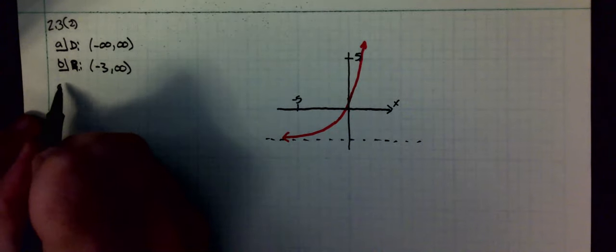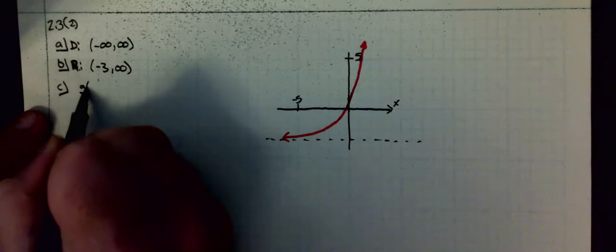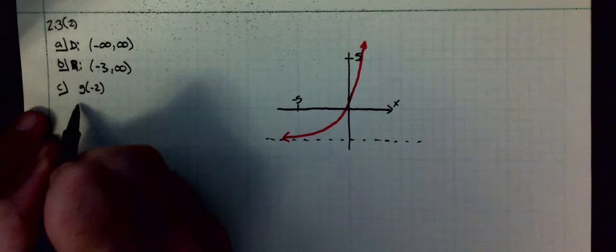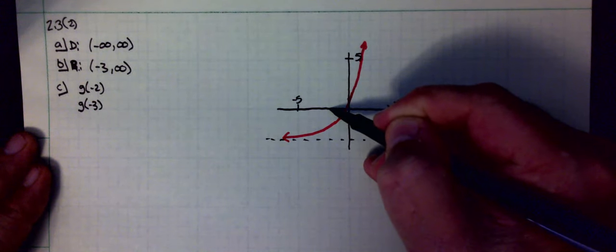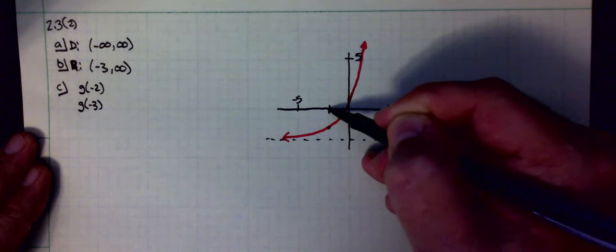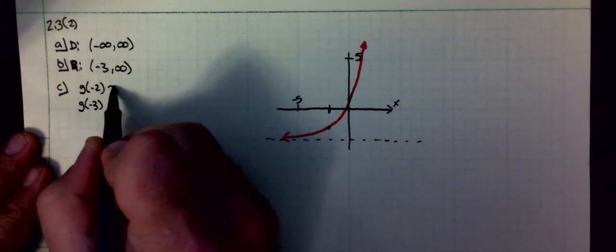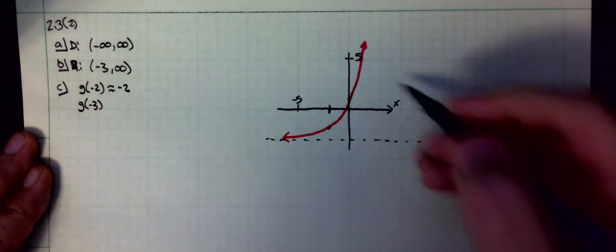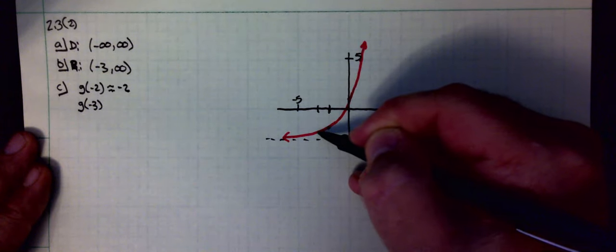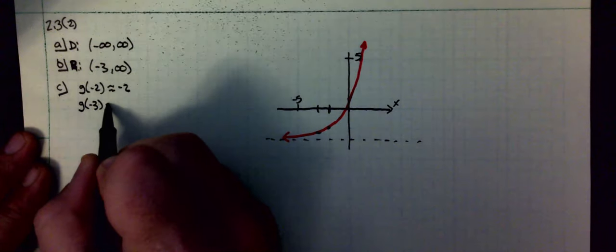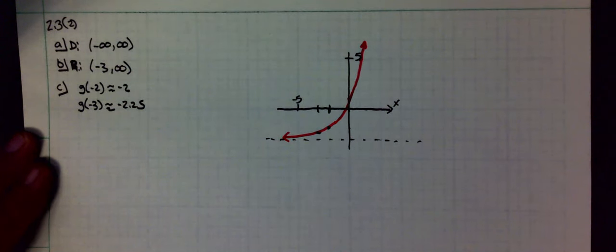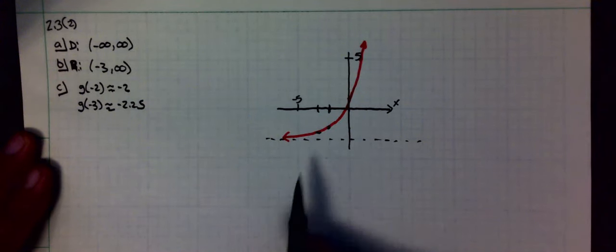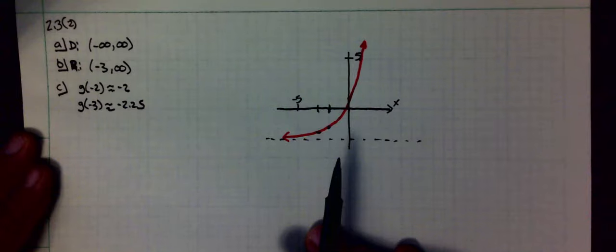Part C wants to estimate g of negative 2 and g of negative 3. g of negative 2: I put a negative 2 in, I come down here, and I get approximately 2. I put a negative 3 in and I get approximately negative 2. And again, I do not need you to be exact on there. I want you to be very close unless the graph actually goes exactly through one of those dots.